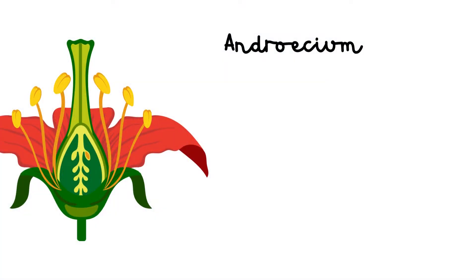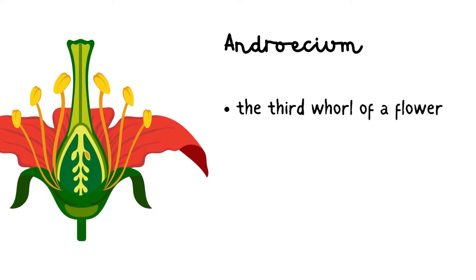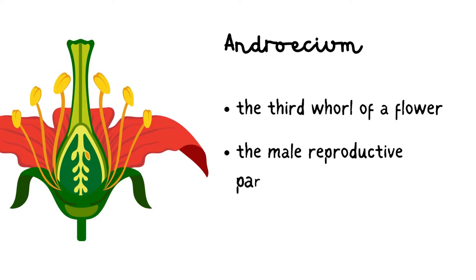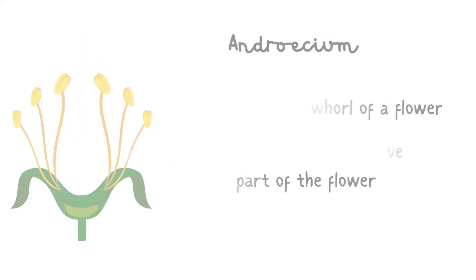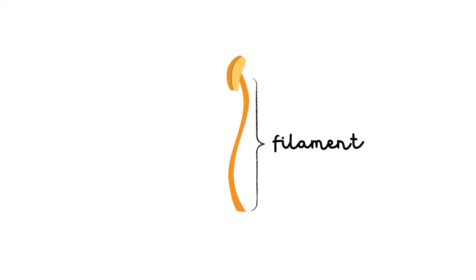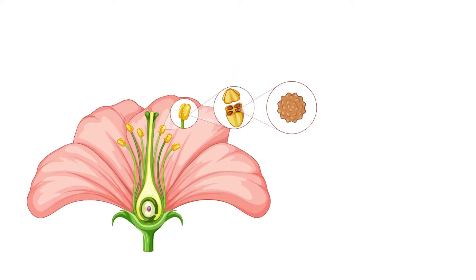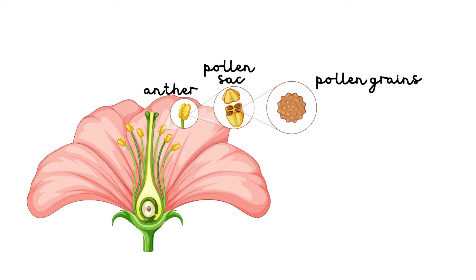Androecium. It is the third whorl of a flower. Androecium is the male reproductive part of the flower. It is composed of a collection of stamens. Each stamen has two parts: a long slender stalk called filament, and an anther present at the tip of the stamen. Each anther has pollen sacs which produce dust-like particles called pollen grains. Pollen grains contain the male gametes or the male reproductive cells.